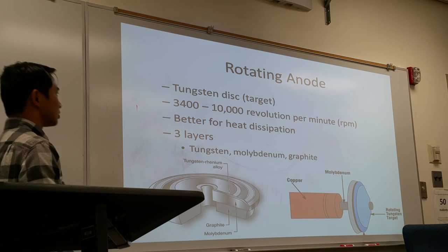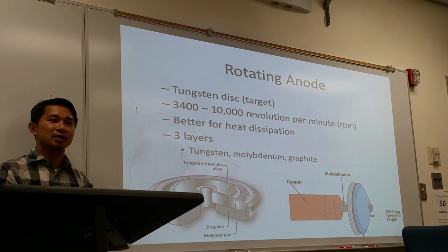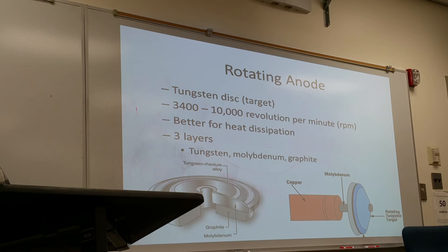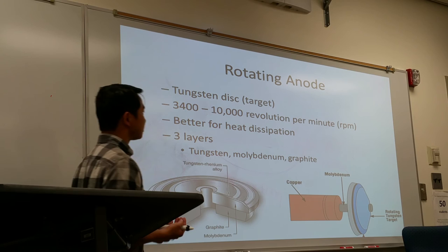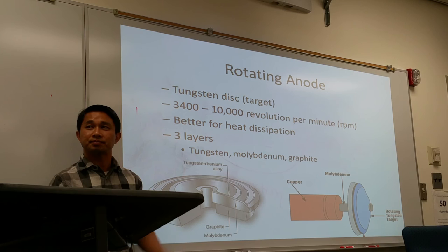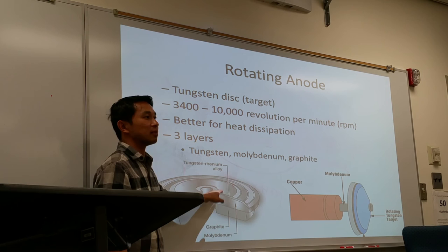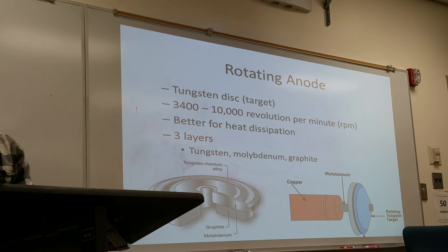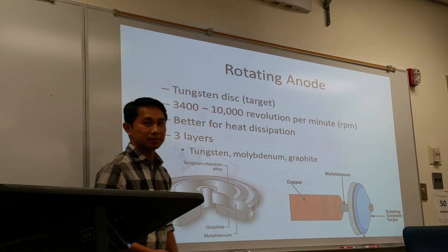The rotating anode is made of tungsten — we call it the tungsten disk or target, because that's where the electrons strike. The rotating disk can revolve at 3,400 to 10,000 revolutions per minute. The advantage of the rotating anode is that heat dissipates over a different surface area each rotation. The layers of the rotating anode from top to bottom are: tungsten on top (where x-ray production occurs), supported by molybdenum, then graphite, then supported by a column. The tungsten is also mixed with other alloys, such as a tungsten-rhenium alloy.